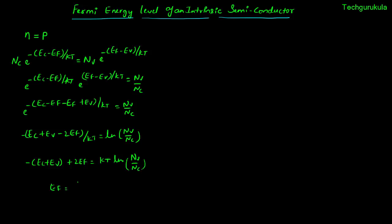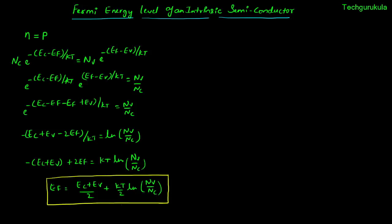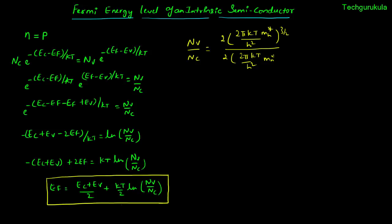So we can write Ef is equal to (Ec plus Ev) over 2 plus (kT over 2) times ln of Nv over Nc. We know the expressions for Nv and Nc: Nv is 2 times (2π kT times Mh star over h squared) to the power 3/2, and Nc is 2 times (2π kT over h squared times Mn star) to the power 3/2. The 2 and the 2π kT over h squared terms cancel.